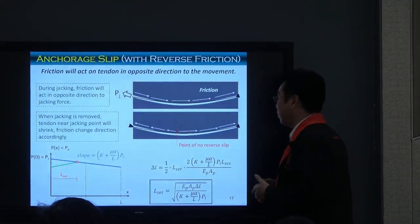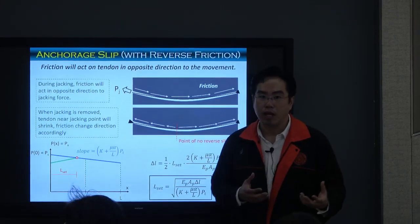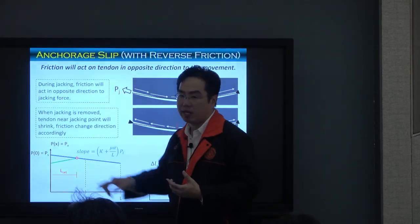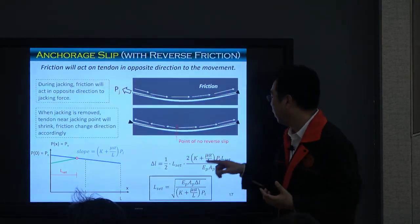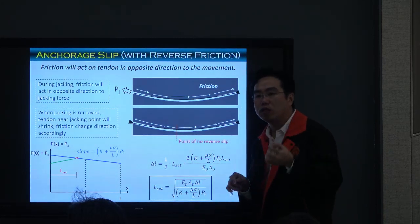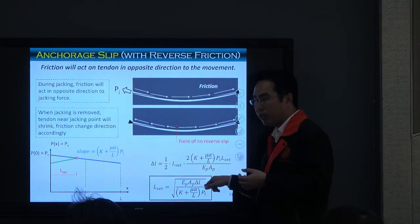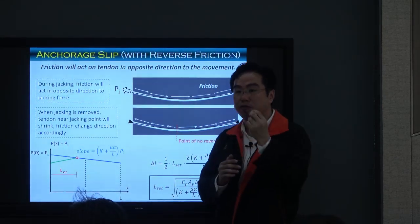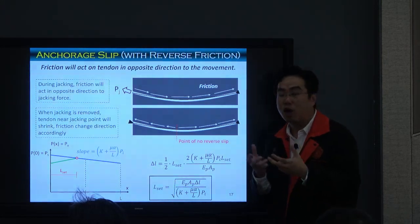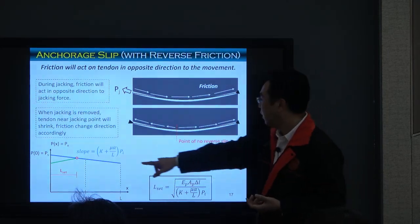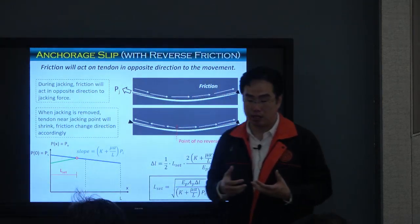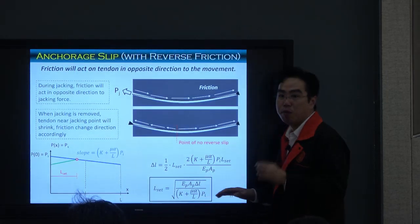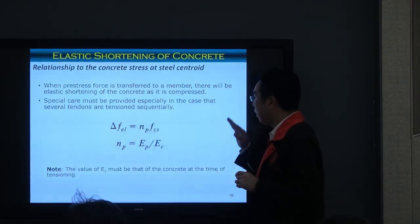Most pre-stressing systems try to limit ΔL to a really small value — normally from 3 to 8 millimeters — so the area affected by anchorage seating loss is usually very small. The third component of immediate loss is elastic shortening of the concrete. When you put the tendon and apply compression to the concrete, the concrete has compressive deformation and shortens a little. When the concrete shortens, the tendon also becomes shortened, and the force reduces. This is called elastic shortening of the concrete.